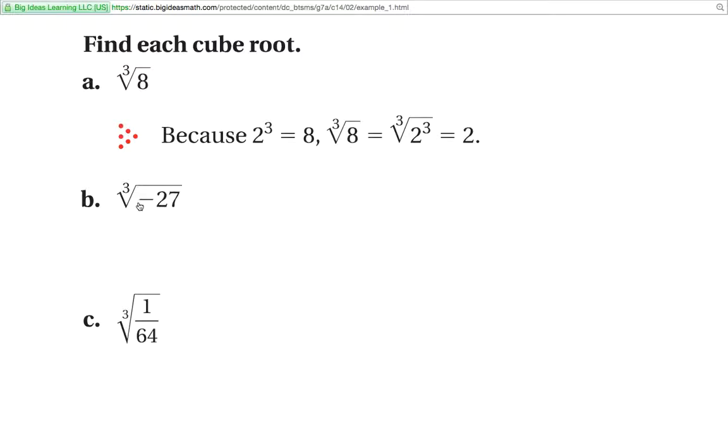Same thing next one. Cube root of negative 27. Alright, negative there. We know that 3 negatives equal a negative. So we know it's going to be a negative number. And that would end up being negative 3. Because negative 3 times negative 3 times negative 3 is going to give you negative 27. The big thing is like really guess and check kind of thing. But the more you practice this, the better you're going to get at it.